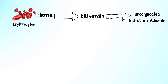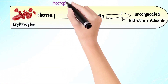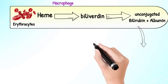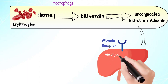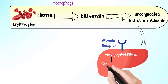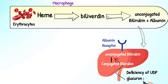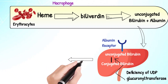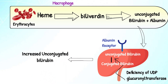Unconjugated bilirubin undergoes reversible binding to serum albumin and transport into hepatocytes. It is not water-soluble and normally combines with one or two molecules of glucuronic acid in the presence of UDP-glucuronyltransferase to form water-soluble bilirubin diglucuronide — conjugated bilirubin. However, in Crigler-Najjar syndrome, due to absence of this enzyme, unconjugated bilirubin cannot be converted to conjugated bilirubin, leading to increased unconjugated bilirubin in the body.